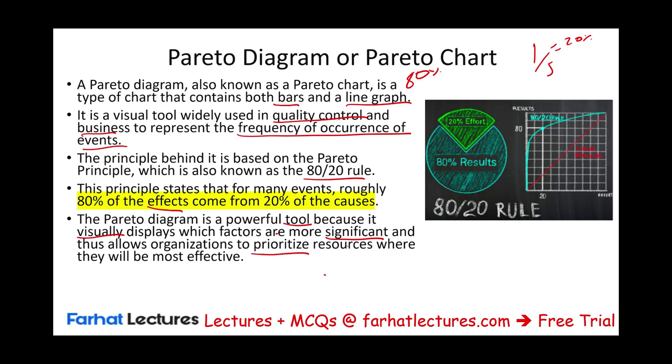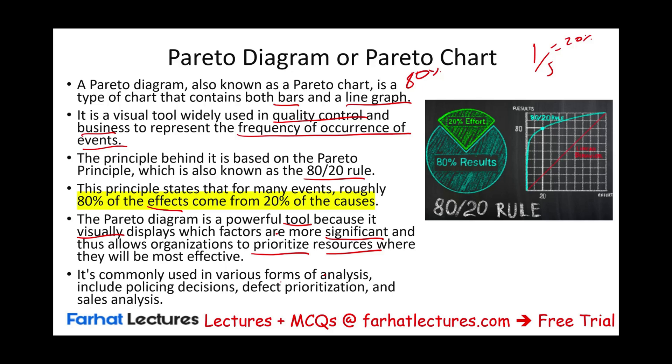This will help the company prioritize resources where they will be most effective. So if these 20% of salespeople are contributing 80% of the revenue, let's reward them, give them more training, and ask them to help others. This method is commonly used in various forms of analysis, including policing decisions. If 80% of the crime comes from a particular area which is 20% of the geographical area, then they will devote more police officers to that area. Also, defect prioritization and sales analysis.